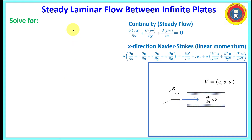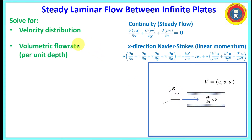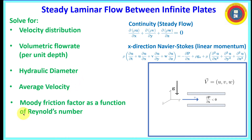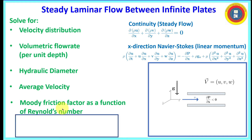We are going to solve for several quantities: the velocity distribution, where the x component of velocity u is a function of y; the volumetric flow rate per unit depth (per unit depth because these are infinite plates); the hydraulic diameter; the average velocity; and the Moody friction factor as a function of Reynolds number. For the classical Poiseuille flow in a circular cylinder, we obtain analytically that the friction factor equals 64 over Reynolds number — we'll get a different result here.